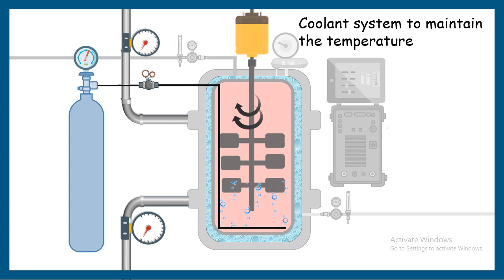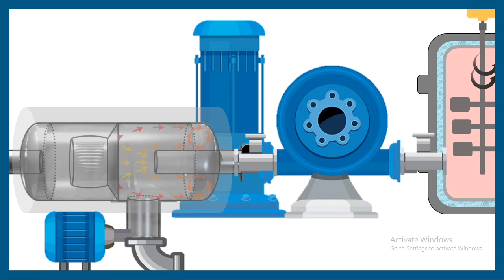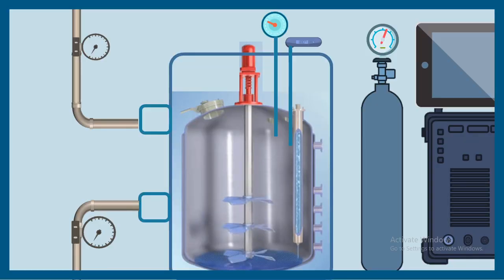There is also an aeration unit that bubbles oxygen through the media. Since some microbes need oxygen and some do not, this component is variable — it ensures dissolved oxygen levels are controllable. Additionally, there are electronic display units, control boards, control panels, and inlet and outlet chambers. The product generated in the bioreactor then passes through an industrial-scale centrifuge, which looks very different from a lab bench centrifuge.